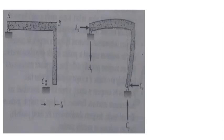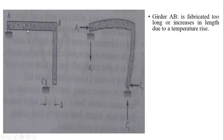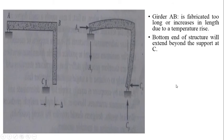Let us see one more example. There is this girder AB, which is fabricated too long or it increases in length due to temperature rise. There is support at C, but this girder AB is fabricated either too long or increases in its length due to temperature change. Now, the bottom end of structure will extend beyond the support at C, and therefore this bottom end of the structure will not be connected at C, it will go beyond C.